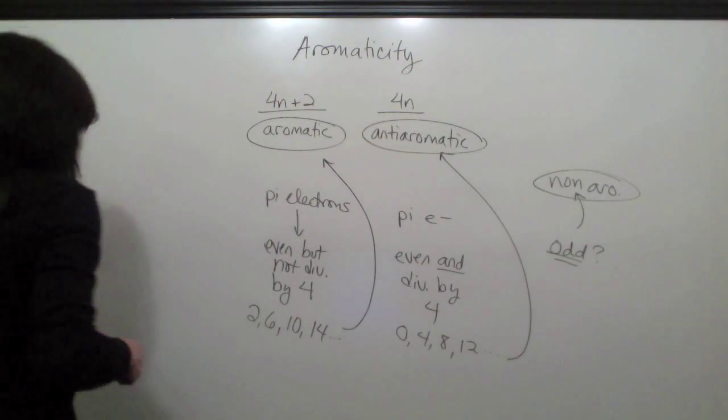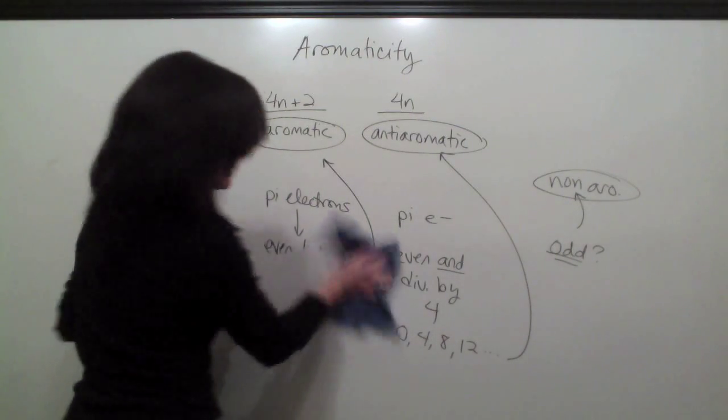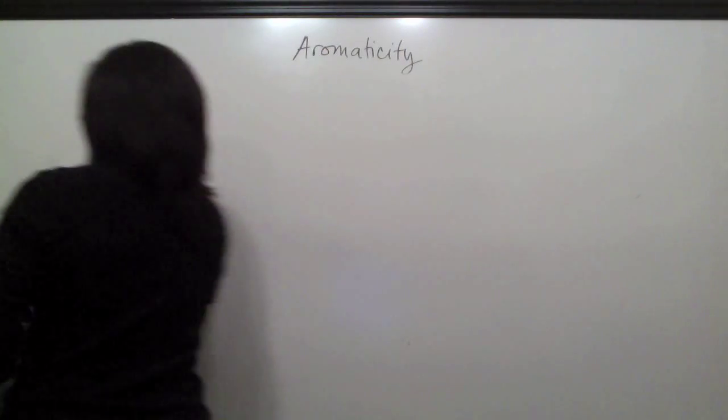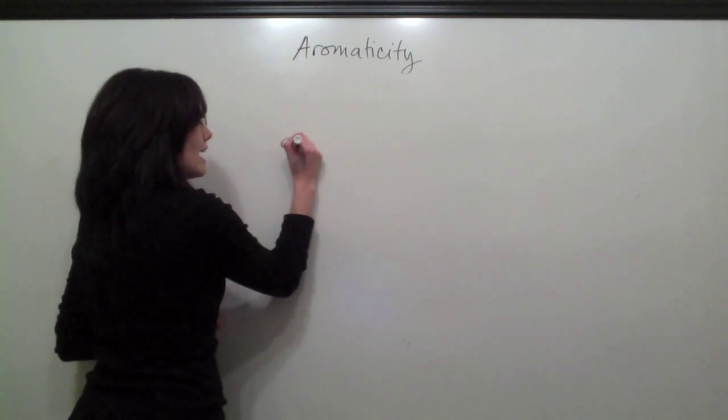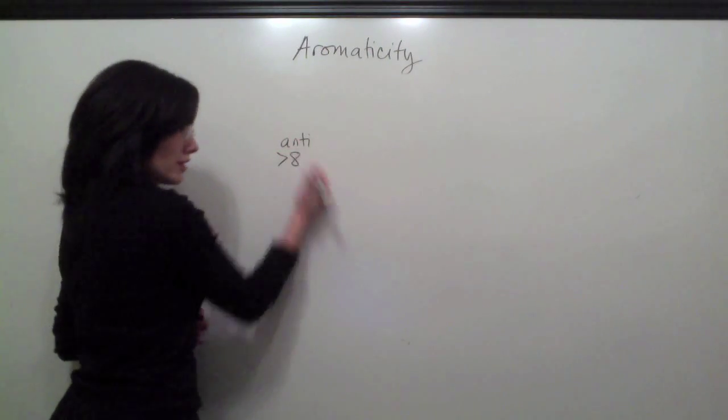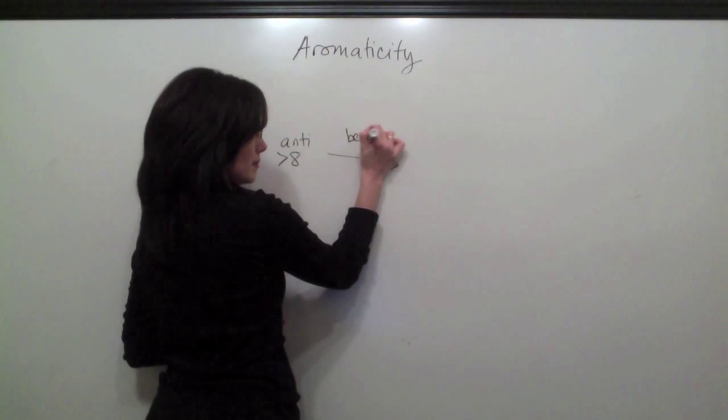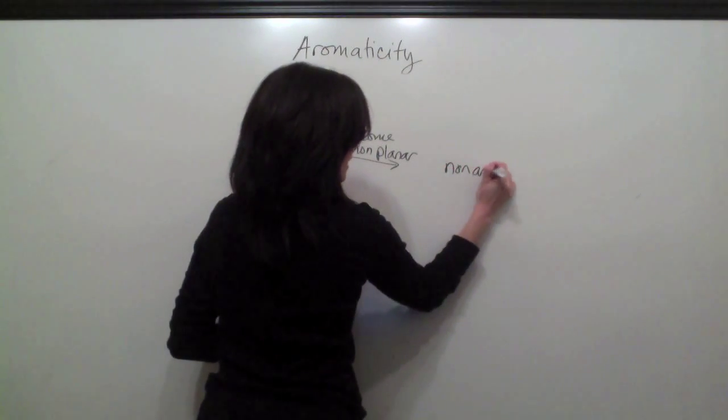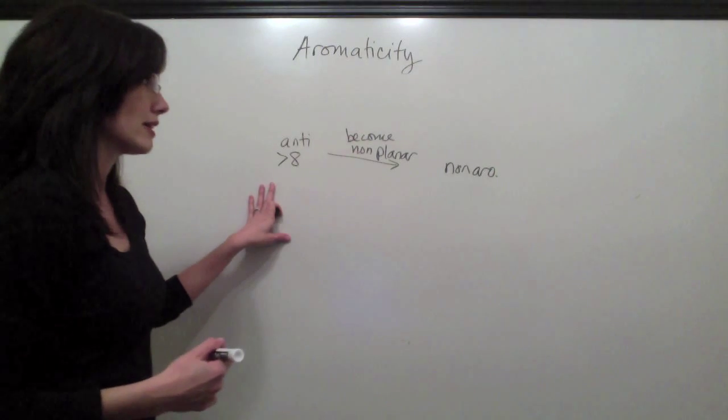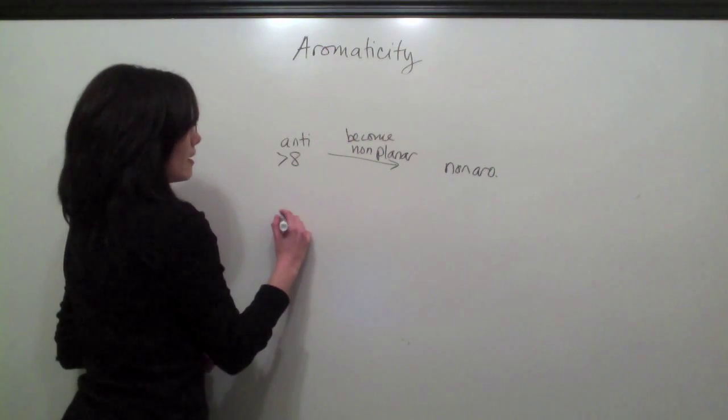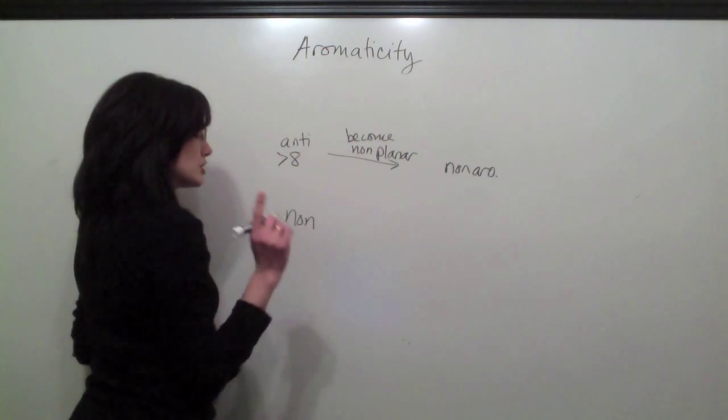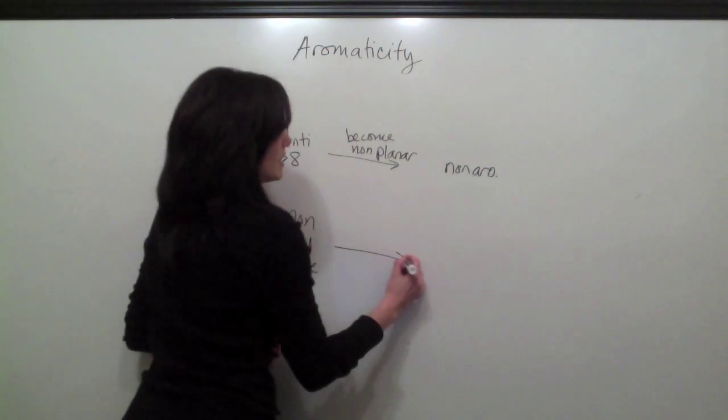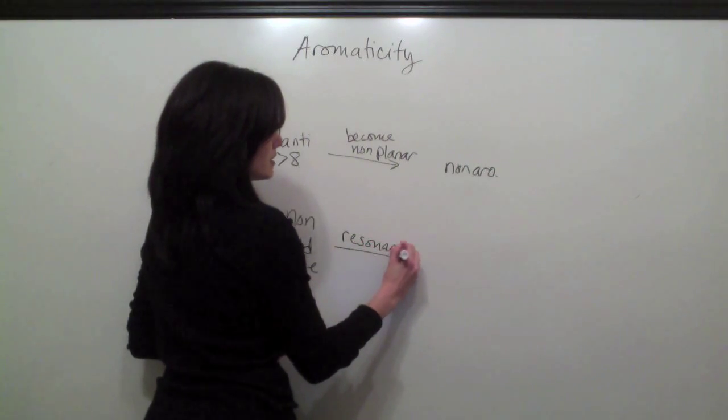Now one thing I want to mention. If your professor is evil and is making this really difficult, there are going to be some unusual cases that you're going to have to cover. There may be cases in which you have an anti-aromatic compound of greater than 8 carbons, which can become non-planar by bending, which will make it non-aromatic, which is more stable than anti-aromatic. There are also cases in which you have a non-aromatic compound that's specifically non-aromatic because it has an odd number of pi electrons that can, through a resonance process, become aromatic.